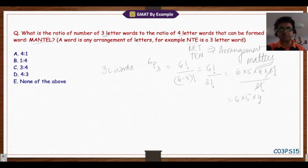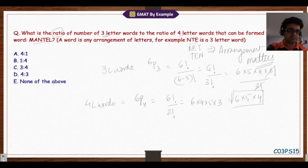Four-letter words can be formed similarly: 6P4, which translates to 6 factorial divided by 2 factorial. Now the proposition is very simple. The question asks us for a ratio, so instead of multiplying, we have this as the numerator and this as the denominator. So we do numerator divided by denominator: 6 × 5 × 4 divided by 5 × 4 × 3.